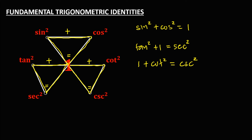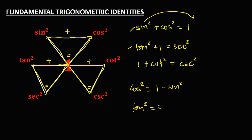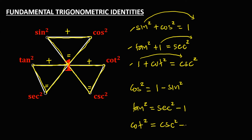From these formulas, if we want to find the identity for cosine squared, that equals 1 minus sine squared. If we want the identity for tangent squared, that equals secant squared minus 1. And for cotangent squared, we transpose the positive 1 so that becomes cosecant squared minus 1. This is how to derive the other formulas for the square of a function.